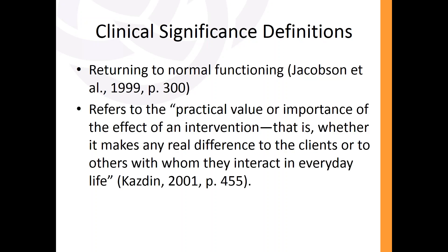Another definition refers to the practical value or importance of the effect of an intervention — whether it makes any real difference to the client or to others with whom they interact in everyday life. The first definition is really more about normative ranges on something like the Beck Depression Inventory. You can test someone pre and post treatment and say, before we started they were definitely depressed, and after treatment we can see they're right at the mean of the normative range. The other definition is not so much about quantifying someone's improvement but more about this idea of practical value, which is much more subjective — what's the real difference to the life of the client or the people close to them? That can only be gauged by asking; you can't have a number tell you what the client is experiencing.